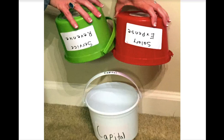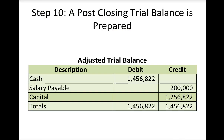Since we just journalized and posted, what do we always do to make sure we're in balance? We have a post-closing trial balance. What you'll notice is that it only lists accounts we don't close — the permanent accounts. Revenues and expenses have disappeared because they have a zero balance. The word 'post' means after, so this is after we closed — this is our trial balance.